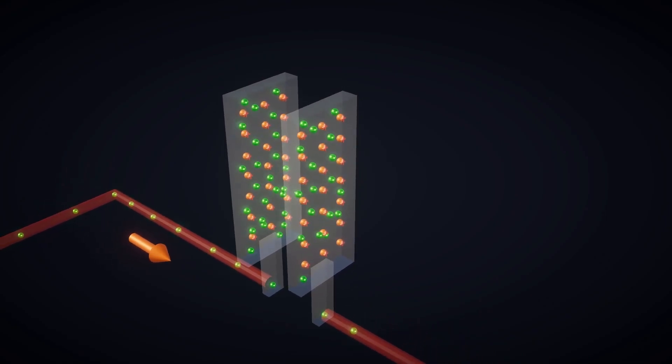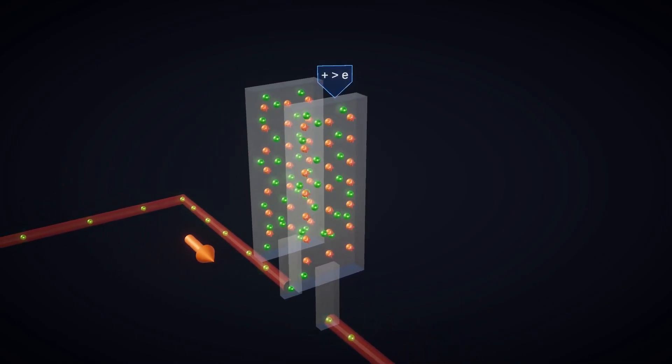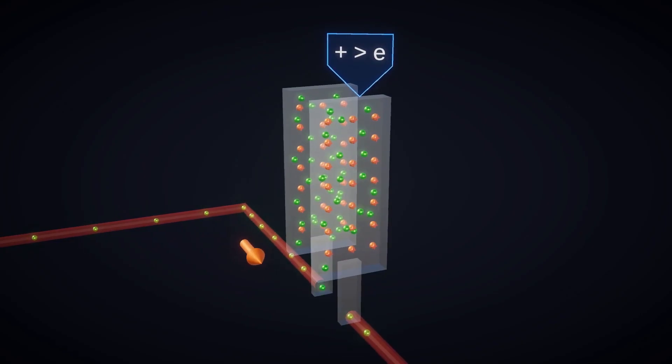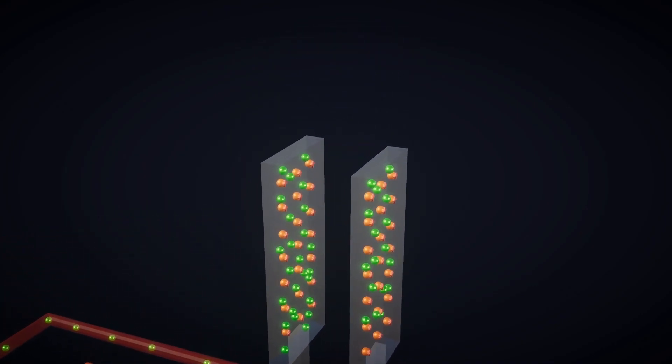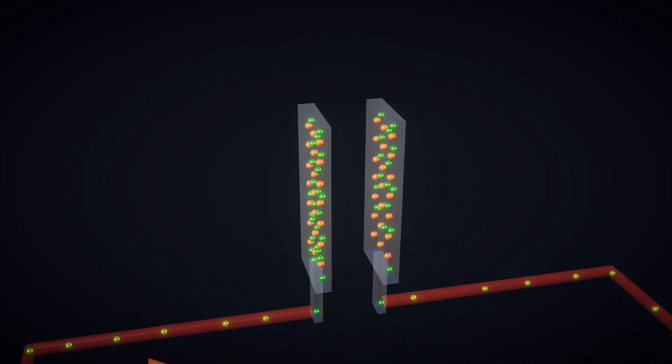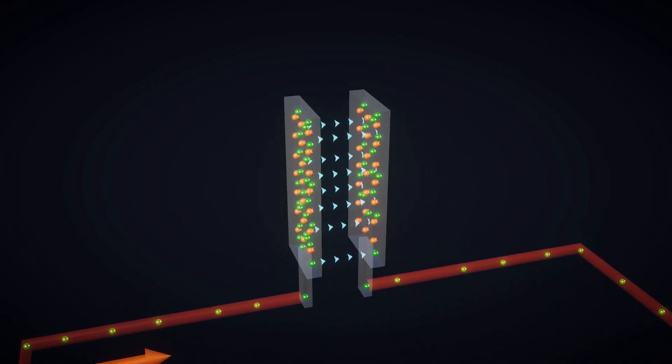As electrons leave, the number of positive particles on the second metal plate becomes greater than the number of negative electrons. These positive particles start attracting the electrons from the first metal plate. We see that for every extra electron added to the first metal plate, an equal number of electrons exit the second plate. Only a certain number of extra electrons can enter the first metal plate.